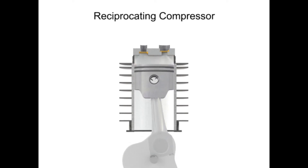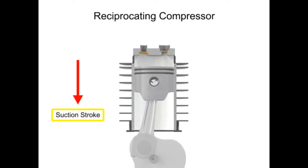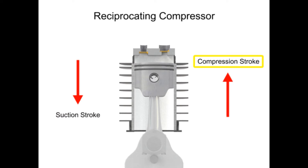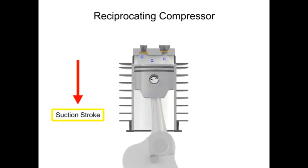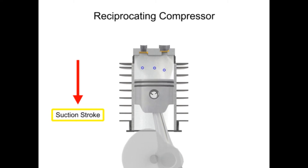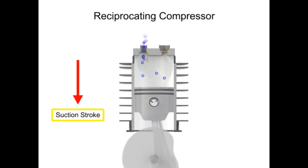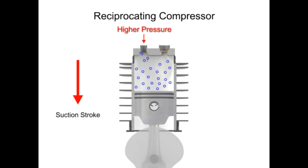The downward stroke of the piston is called the suction stroke. The upward stroke is called the compression stroke. As the piston moves downward on its suction stroke, the volume increases within the cylinder. As the volume increases, the pressure within the cylinder becomes lower than the inlet air pressure. This allows the higher pressure outside air to push open the inlet valve and allow more air into the cylinder.